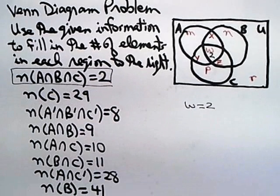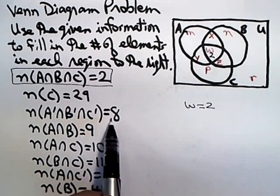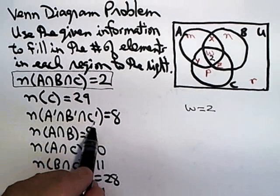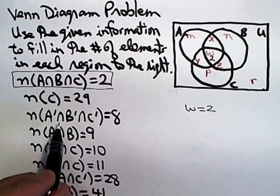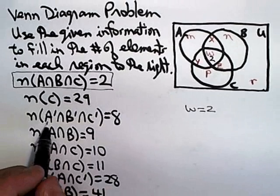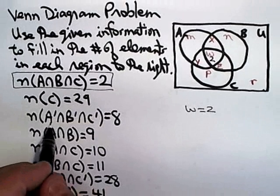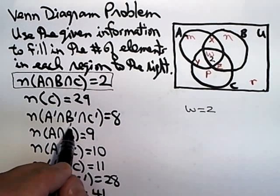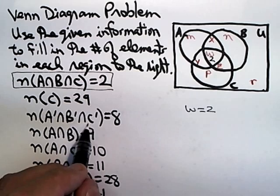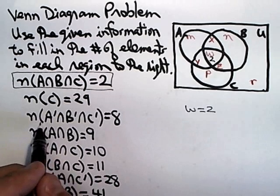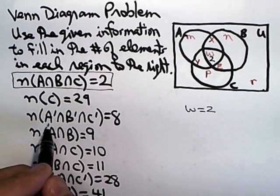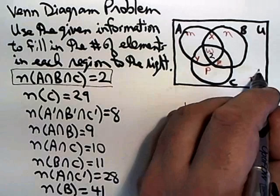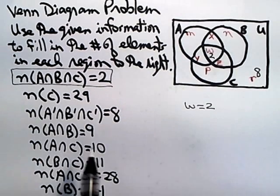Then you sort of move your way around. The other one that's really easy if you interpret it correctly is this one. It's the intersection of all the complements. So these are the number of elements that are not in A, and they're not in B, and they're not in C. So in other words, the number of elements that aren't in any of the circles. So they're telling you that R is equal to 8.